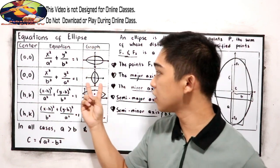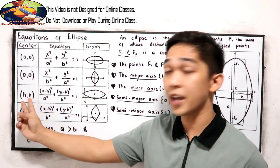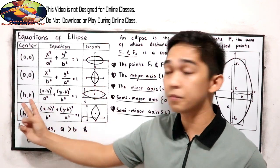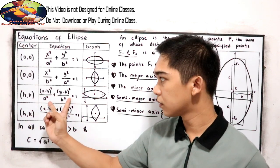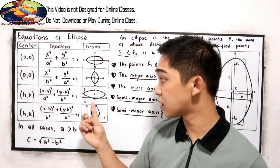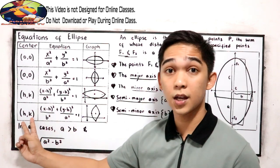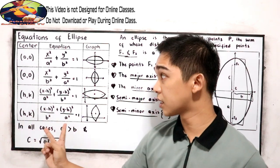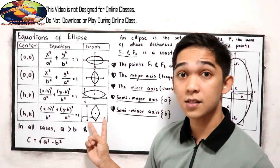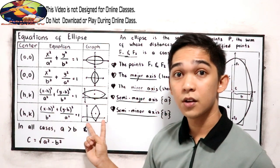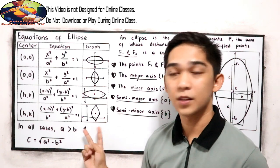This is the graph that you are going to expect. And if we have the HK form, we have the corresponding equation, and this is the graph you are going to expect. And for HK, there is another equation form, and this is the graph — or the outcome of your graph.